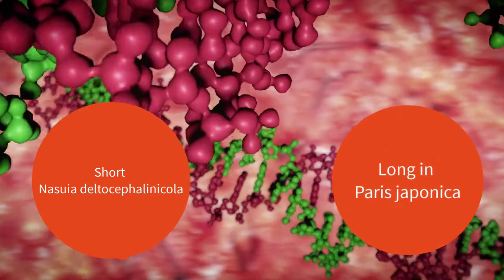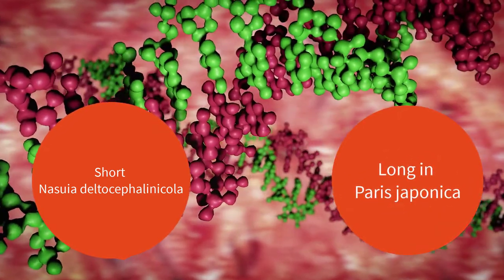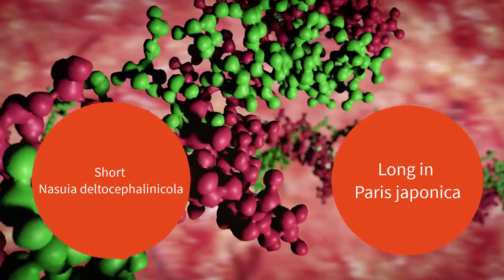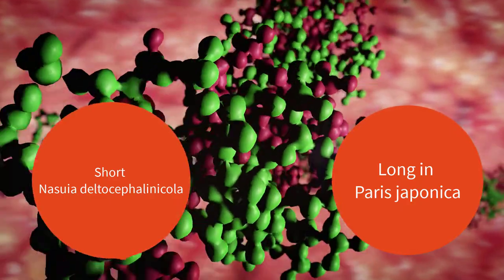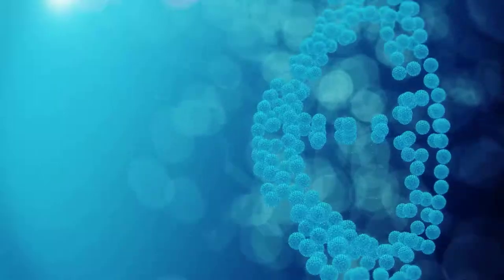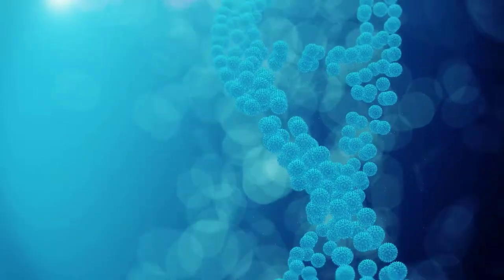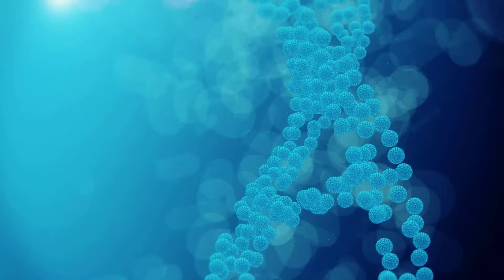Whereas some, like the flowering plant Paris Japonica containing 149 billion nucleotides, are so long that it's difficult to get a sense of how many genes are contained within.